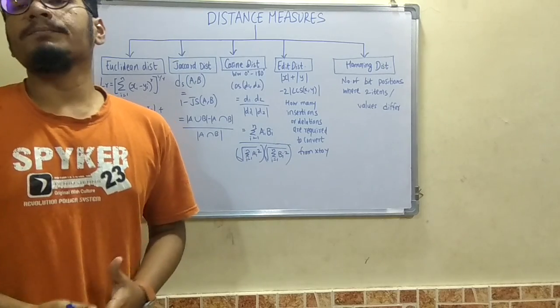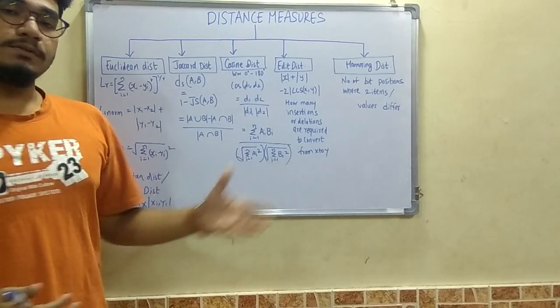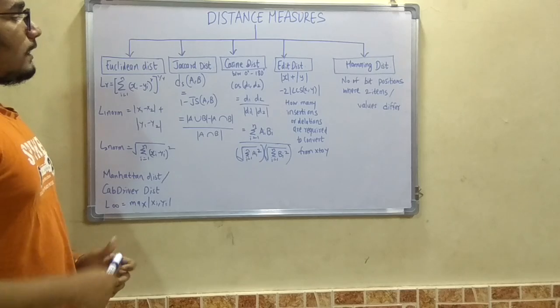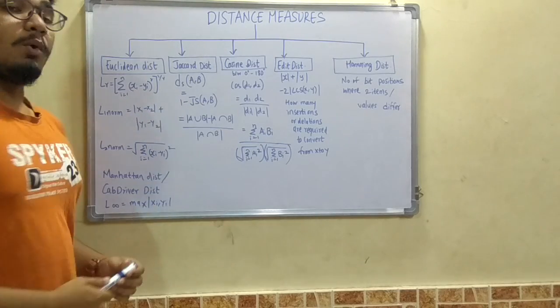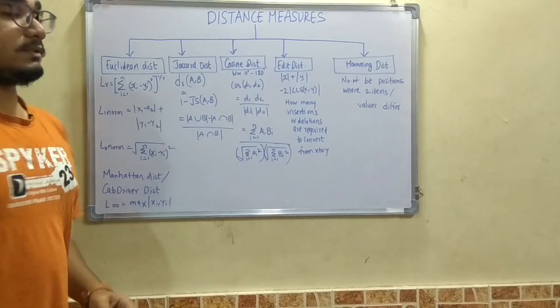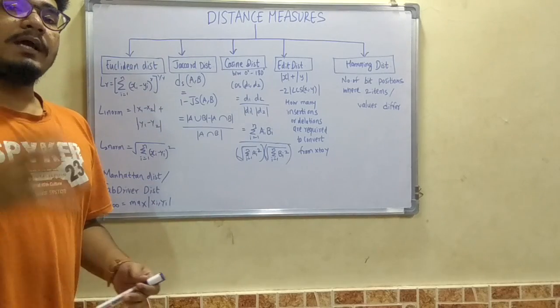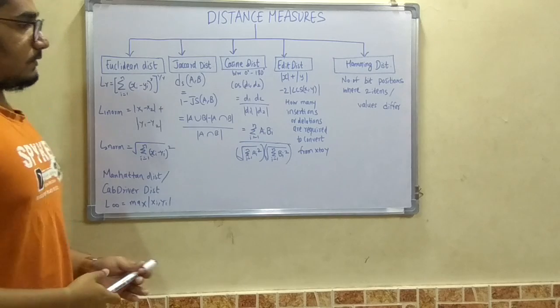They are classified under five main divisions: first is the Euclidean distance, next is the Jacquard distance, then the cosine distance, then the edit distance, and finally the Hamming distance. Let us see what each of these consists of and we'll see one problem in each section.